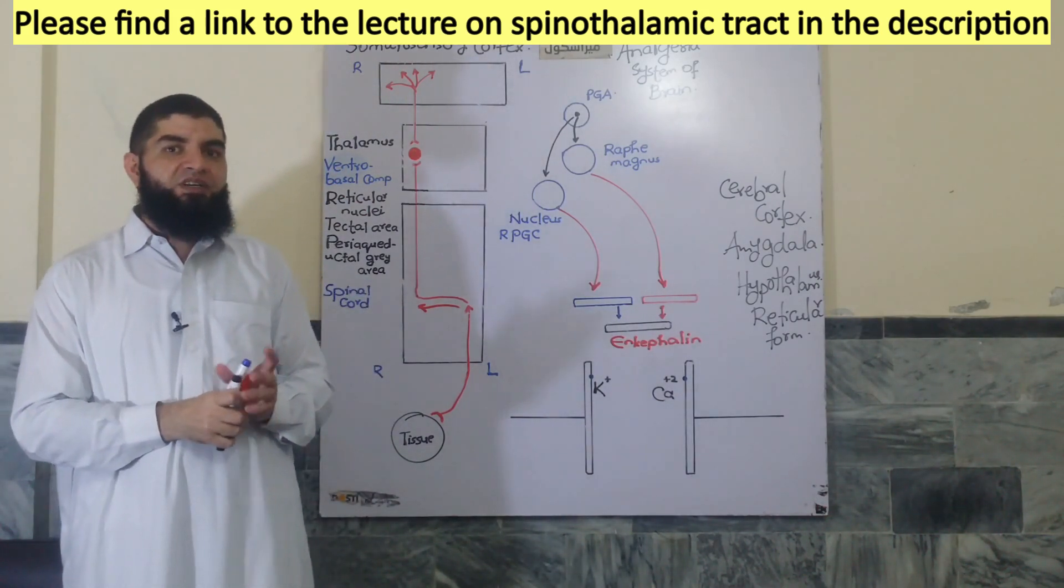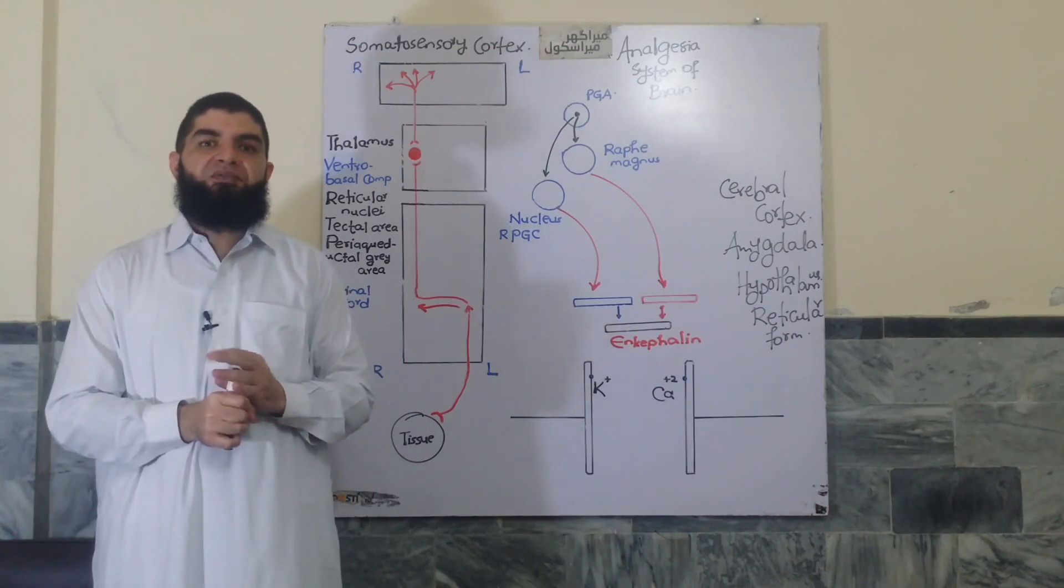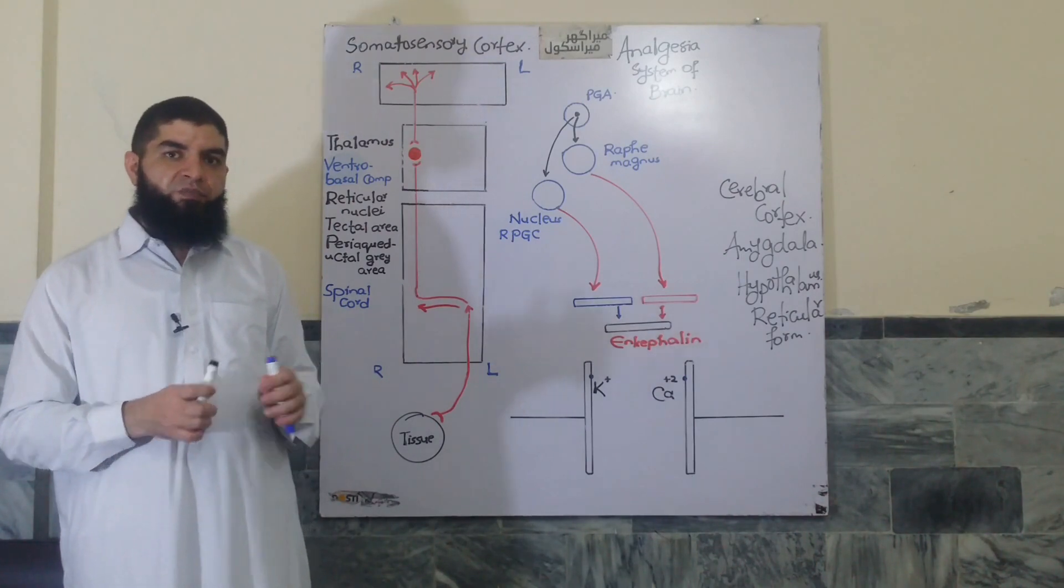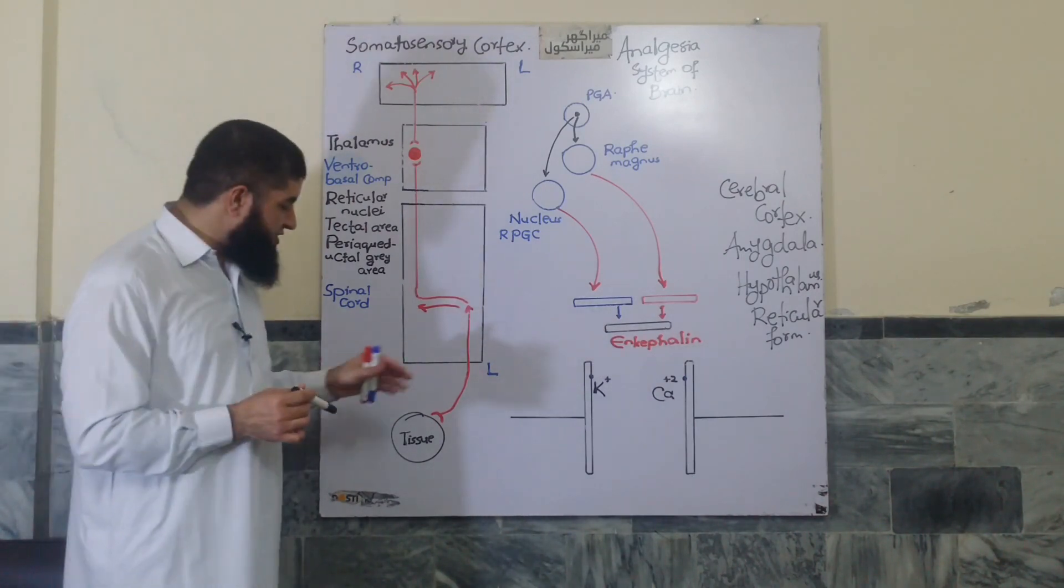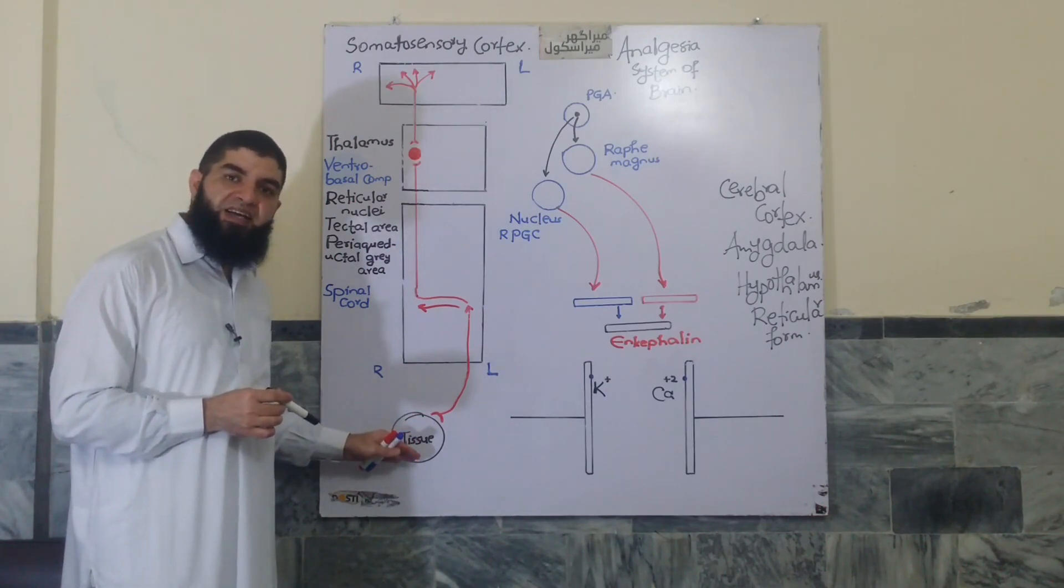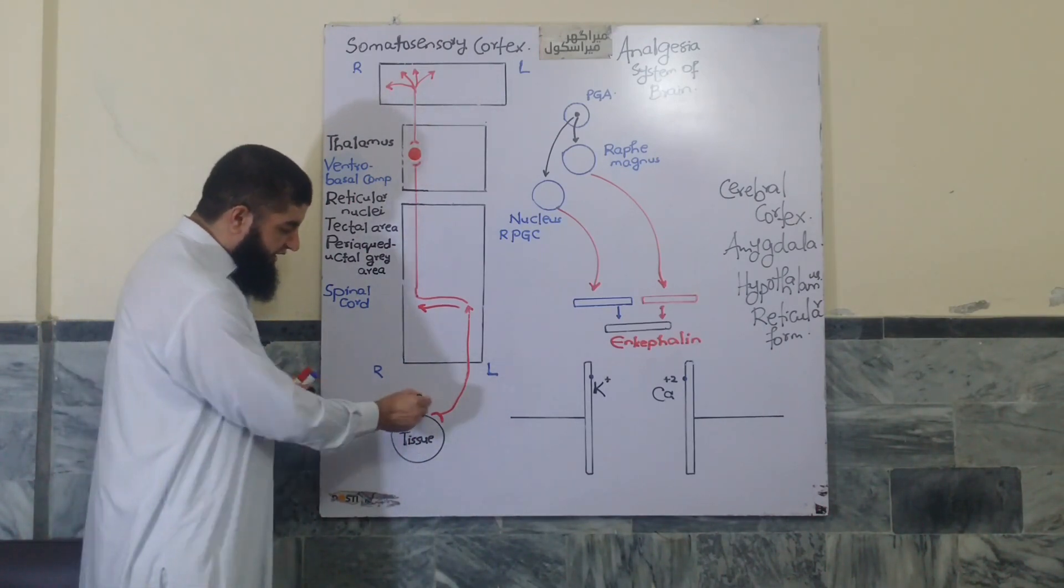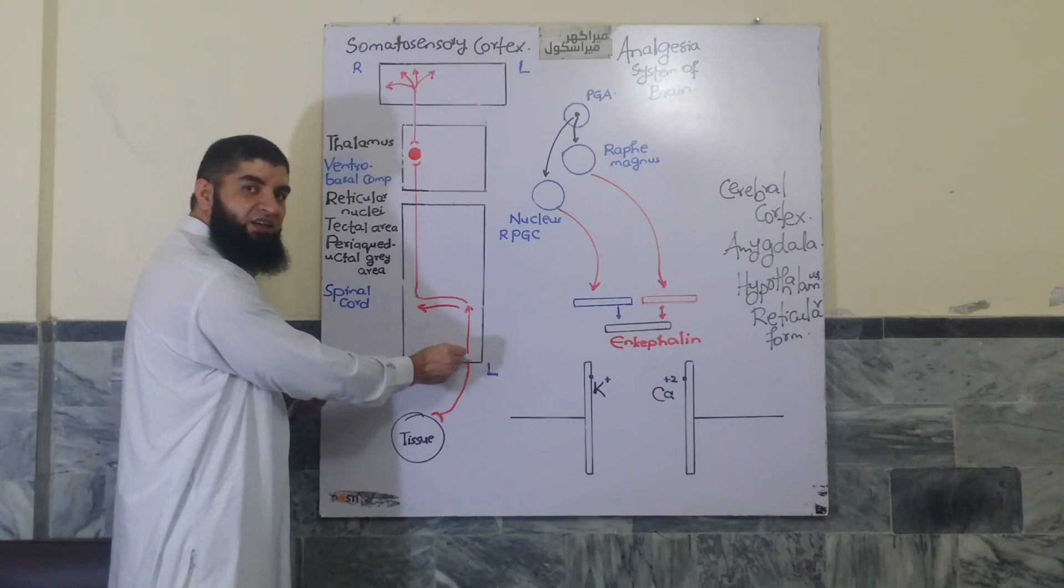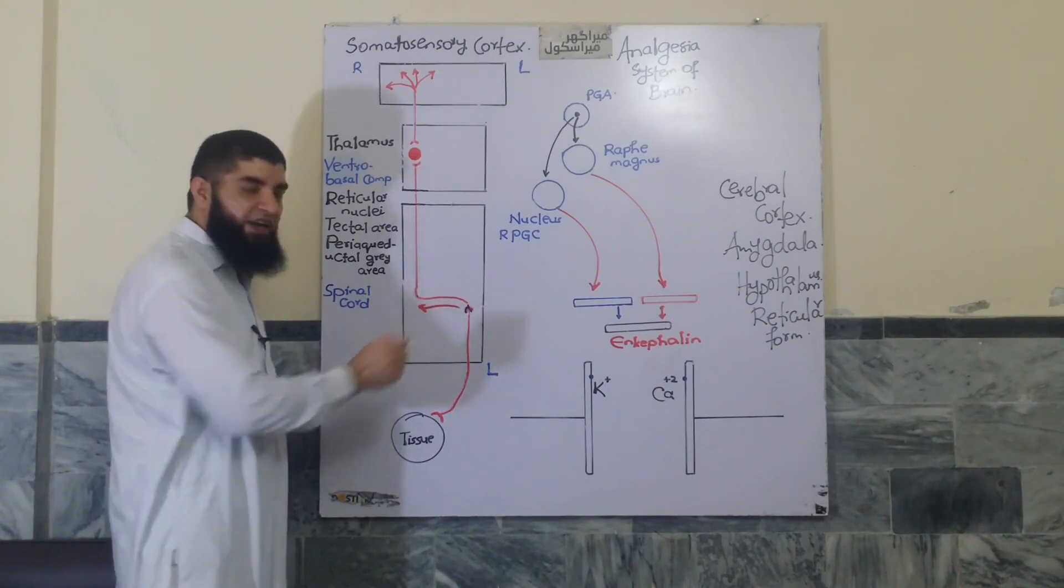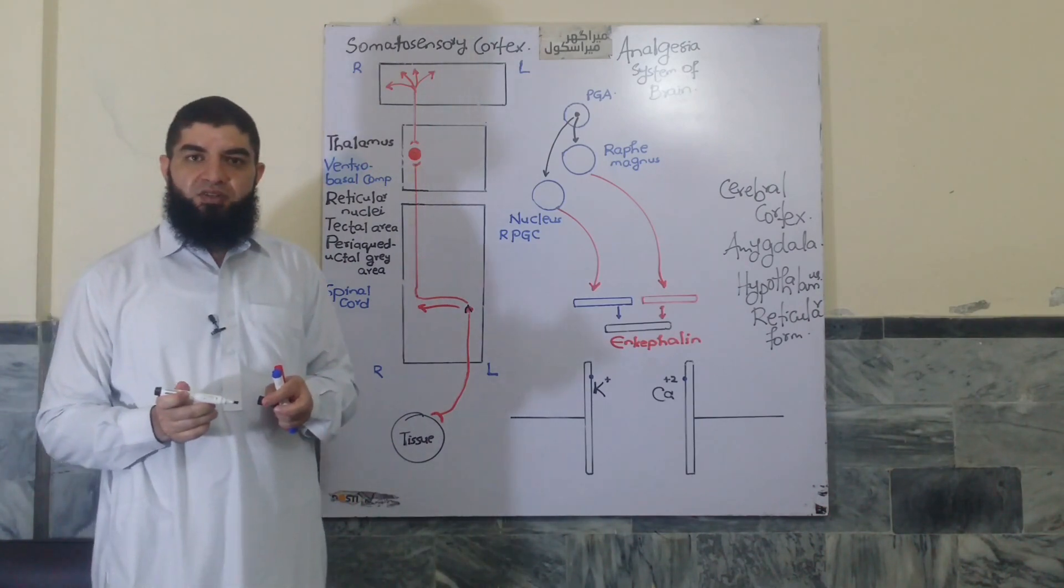The receptors for all these sensations are the free nerve endings and they constitute the first order neurons. The free nerve endings of the first order neurons are stimulated by painful stimuli causing tissue injury and they enter the spinal cord, ascend for a level or two before synapsing here on the second order neurons.